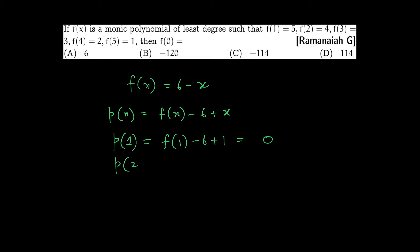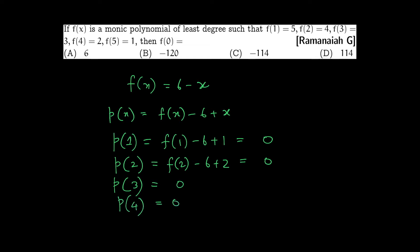P(2) equals f(2) minus 6 plus 2, which gives 0. Similarly P(3), P(4), and P(5) will all come out to 0. So 1, 2, 3, 4, 5 are all roots of P(x), meaning P(x) equals 0 at each of these points.